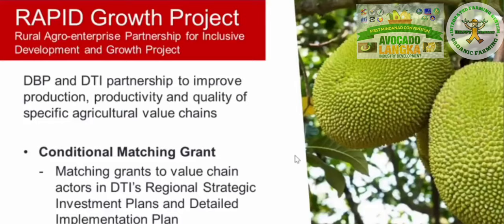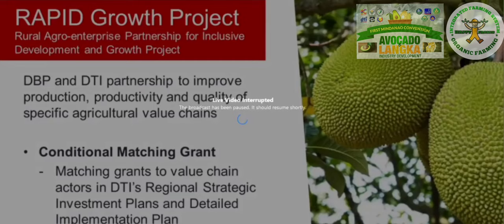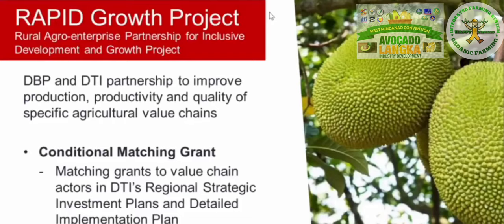DBP is also a champion of inclusiveness. This brings us to a recent partnership initiative with the Department of Trade and Industry to support their implementation of the national government's Rapid Agro Enterprise Partnership for Inclusive Development Growth — the RAPID Growth Project — funded by the International Fund for Agricultural Development.